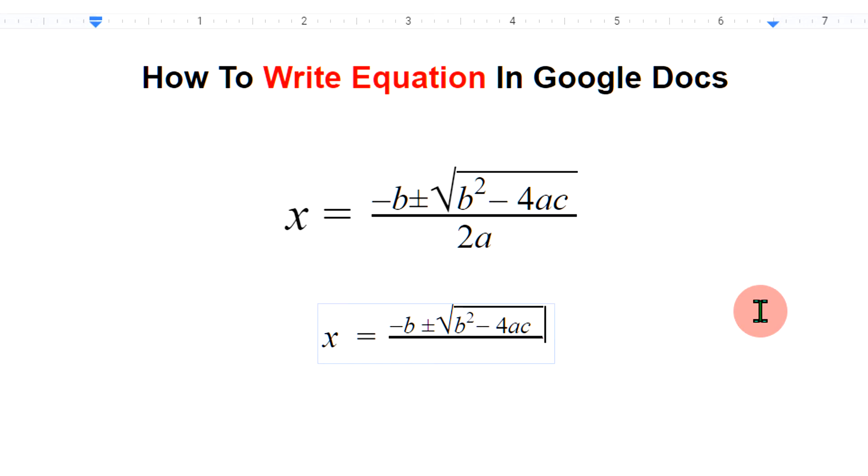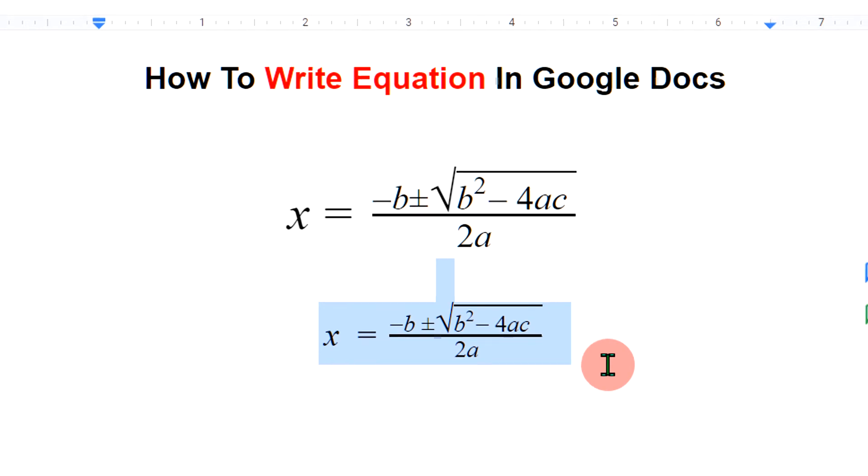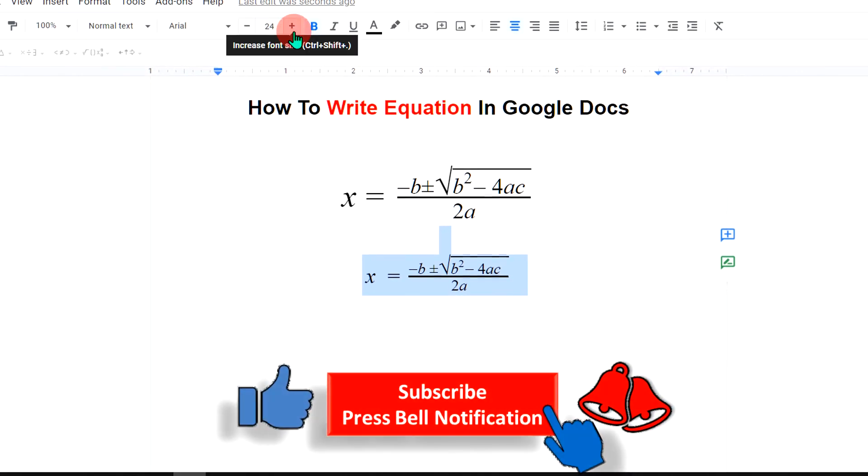press forward arrow key to go to the denominator and type 2a. If you want to change the font size, select the complete equation box with the equation, and now you can change the font size from here and you